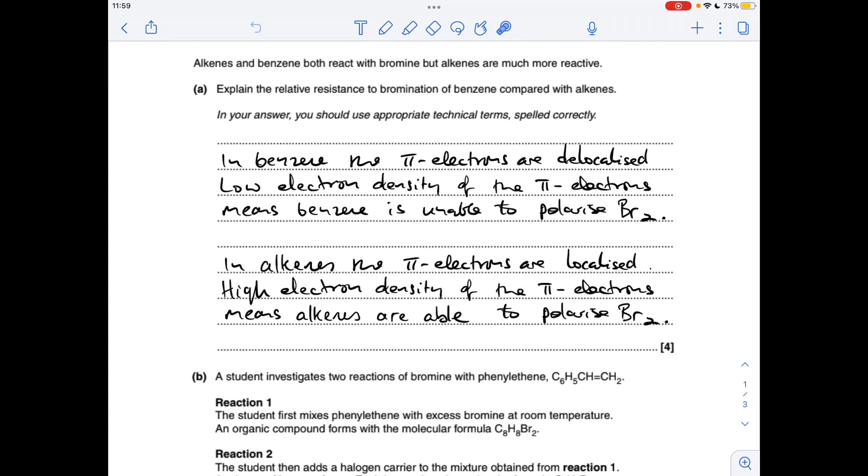Whereas in alkenes, the pi electrons are localised - they're just shared between the two carbons of the double bond. So that means the pi electrons have a high electron density and therefore can polarise a bromine molecule.